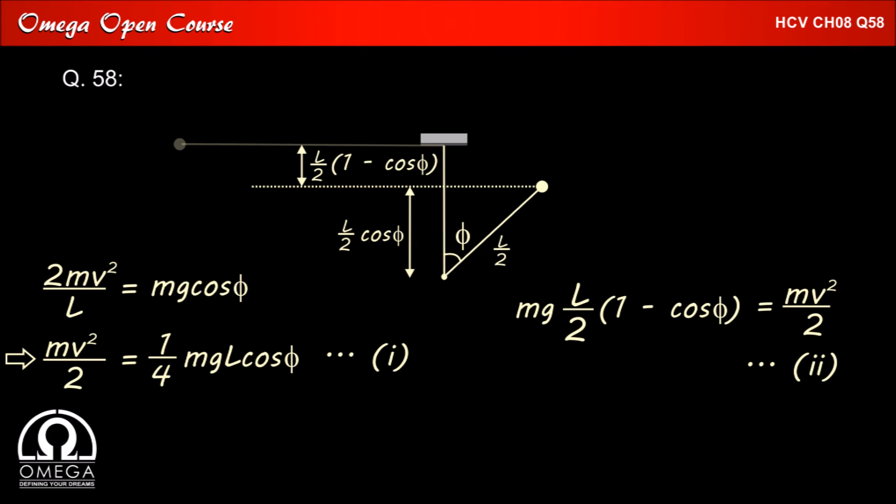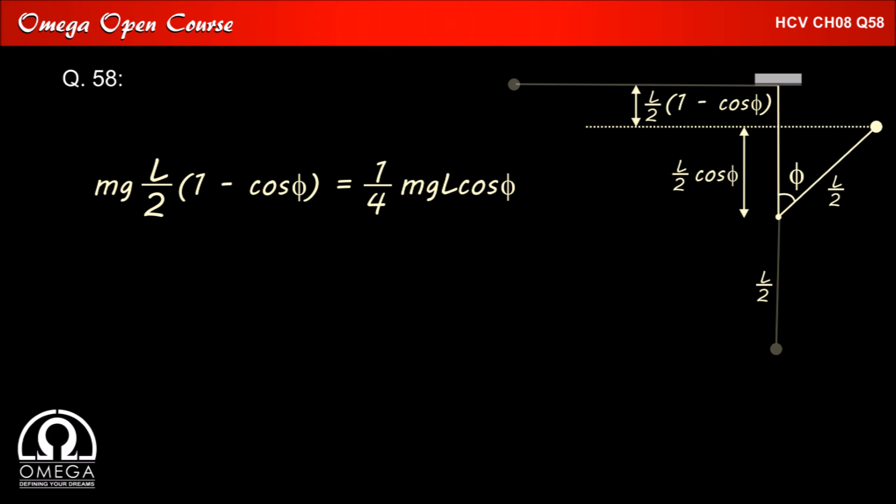Therefore mg L by 2 times 1 minus cos phi must be equal to half mv squared. Putting the value of half mv squared from equation 1 into equation 2 we get mg L by 2 times 1 minus cos phi equals 1 by 4 mg L cos phi, which implies 2 times 1 minus cos phi equals cos phi, which implies 3 cos phi equals 2, which implies cos phi is 2 by 3.